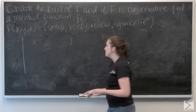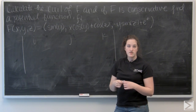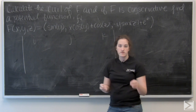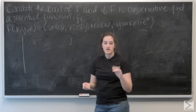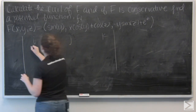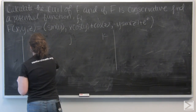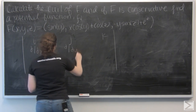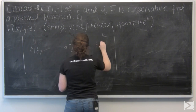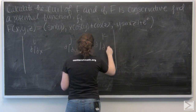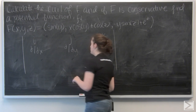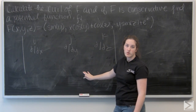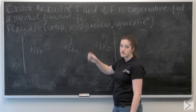The top row is going to be i, j, and k. The second row is going to be the partial derivatives ddx, ddy, and ddz. And then the bottom row is just going to be the i, j, and k components of my vector field.